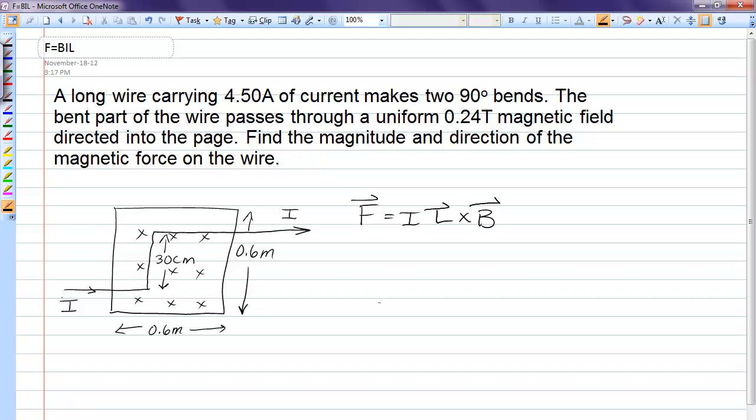So we have a current that is passing into a region where there's a magnetic field, turning a corner, carrying on in that region, having turned a second corner, and we're looking for the net force. So we do I cross B, or L cross B, for each segment.